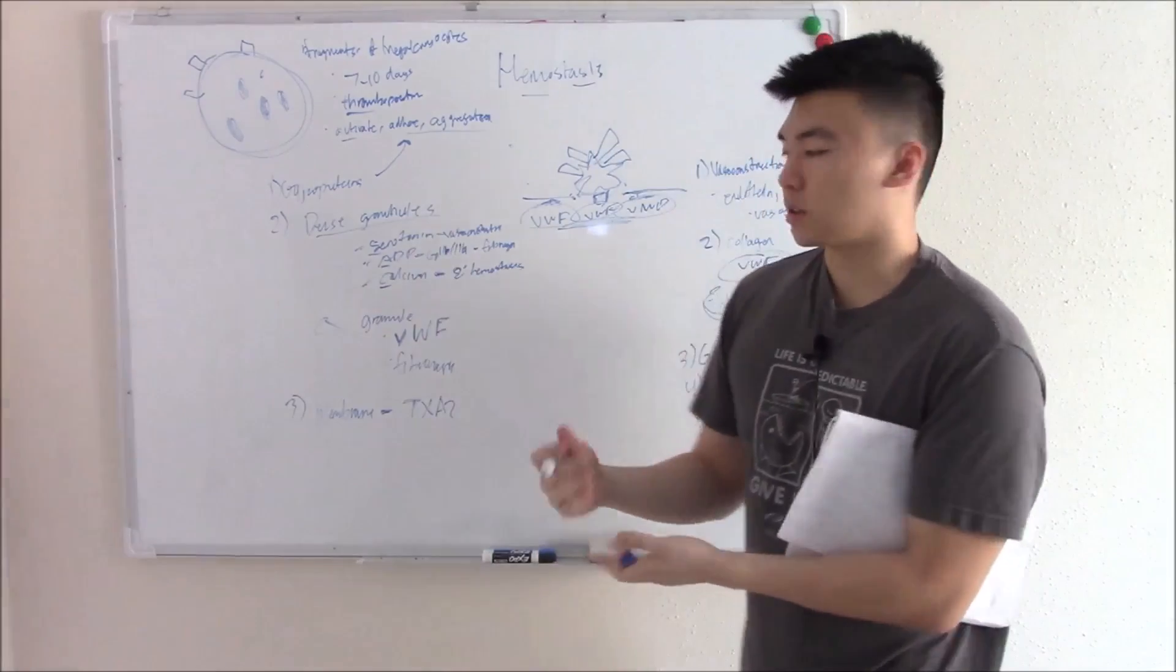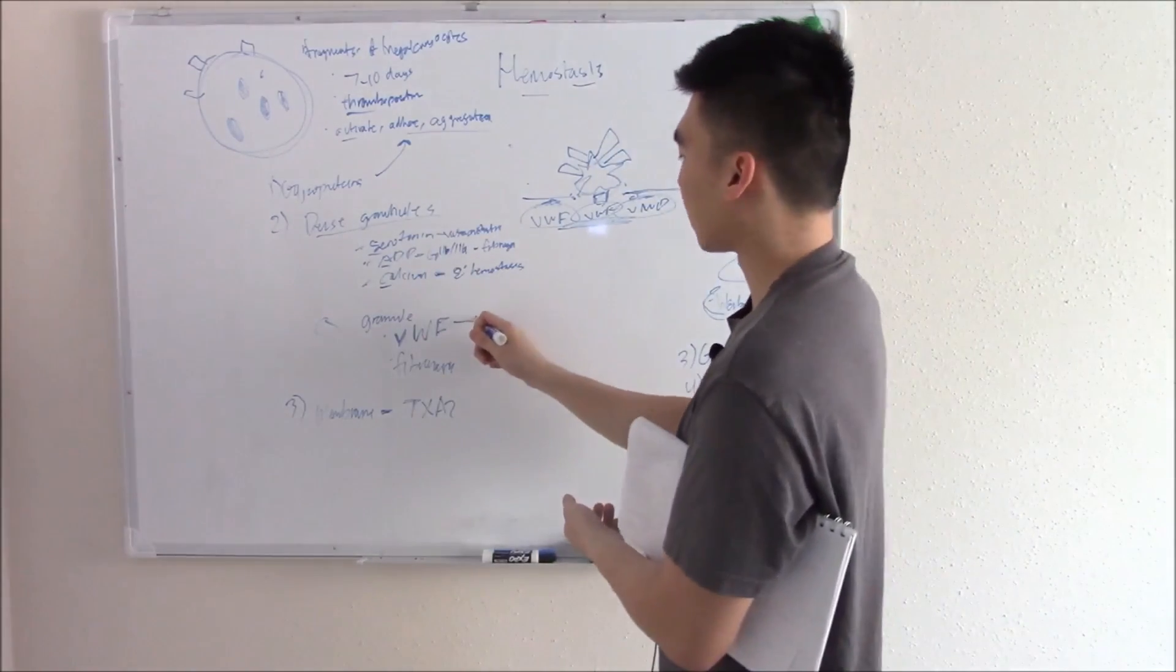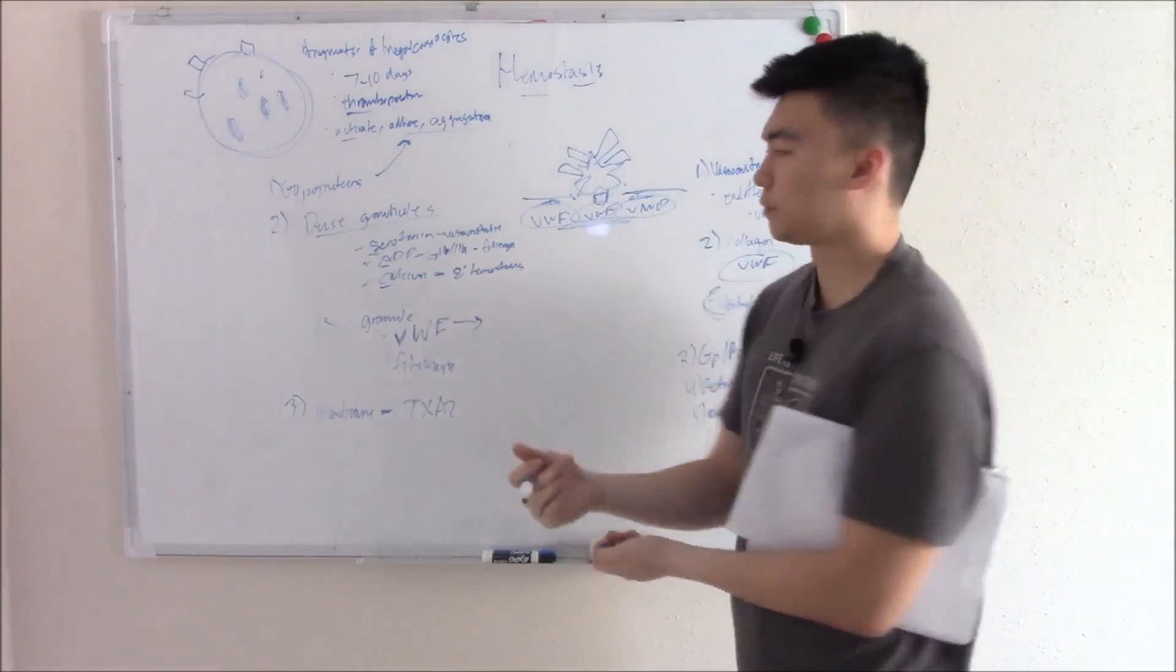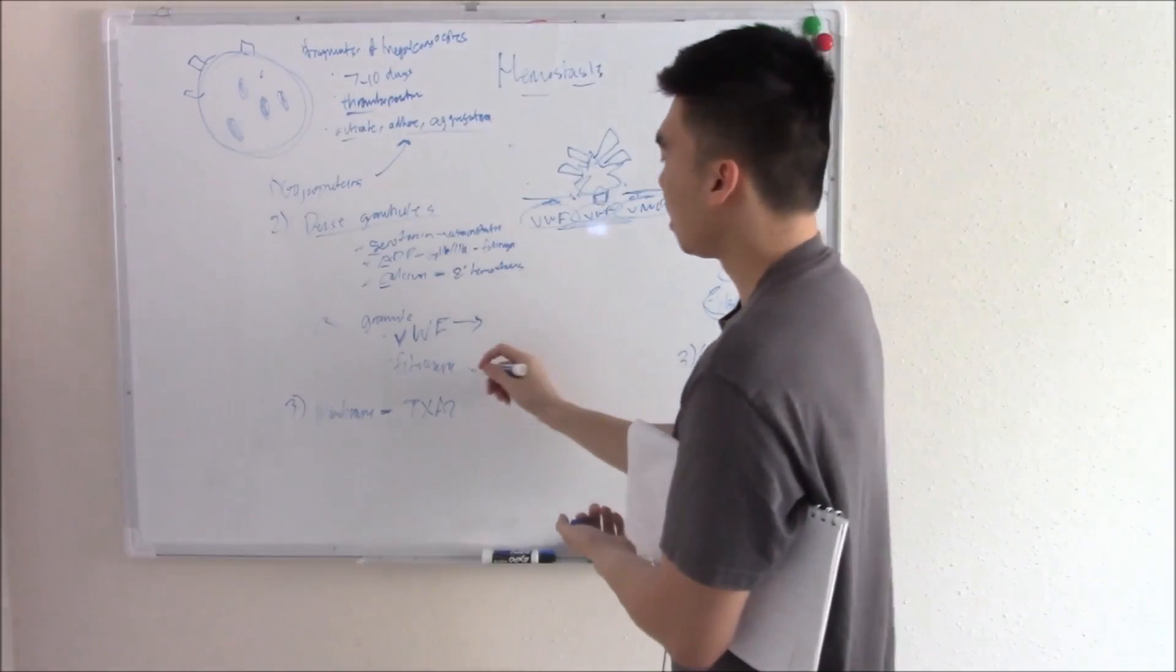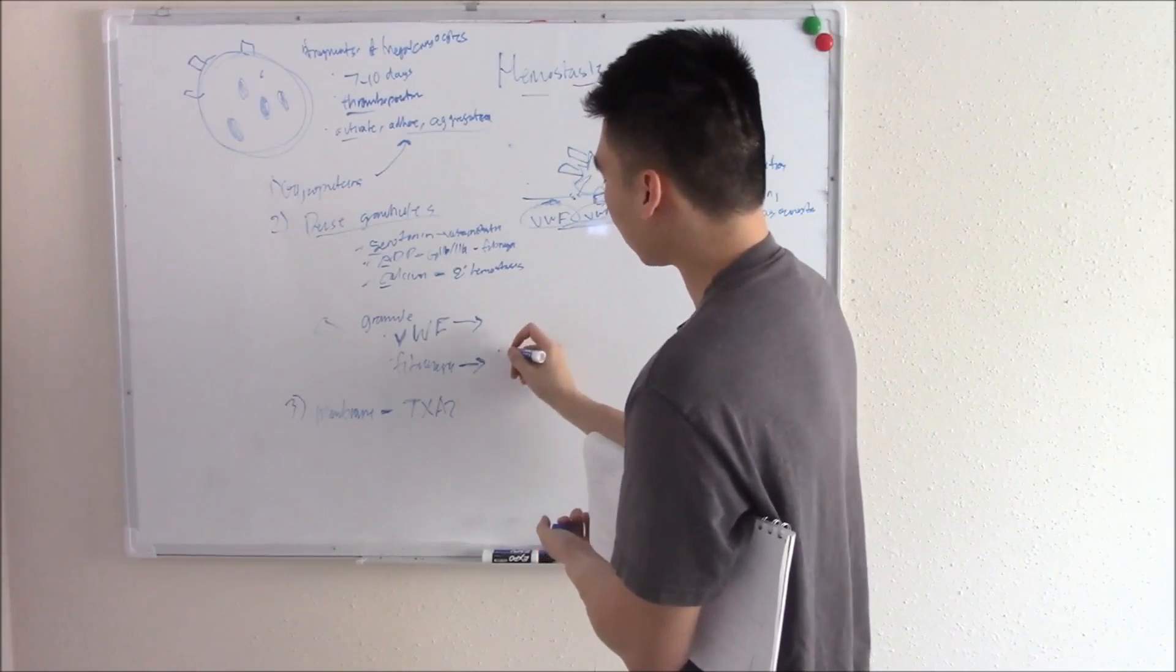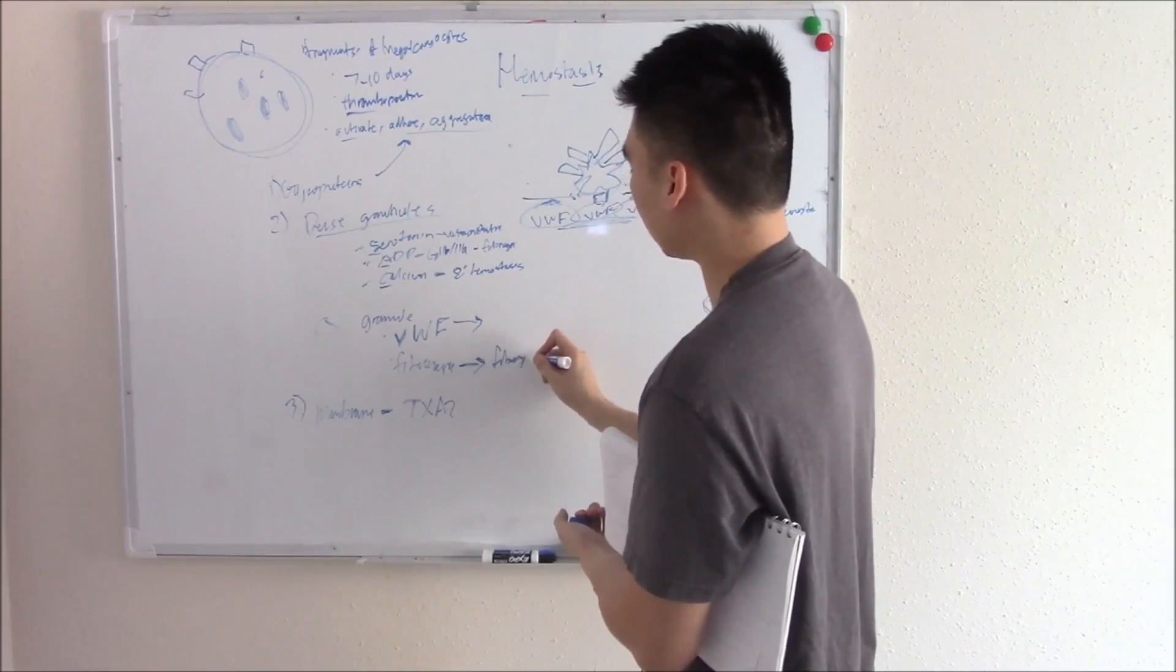Your alpha granules will start to degranulate. Von Willebrand factor, just because we need it to stick more and adhere more. Fibrinogen, that's our drape, that's what we were waiting for the whole time. Fibrinogen will start to release.